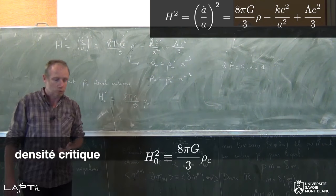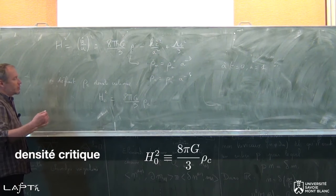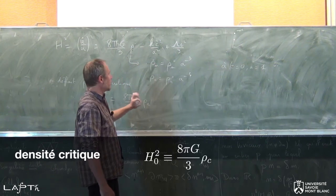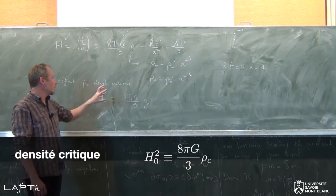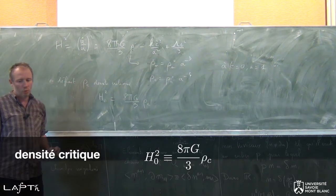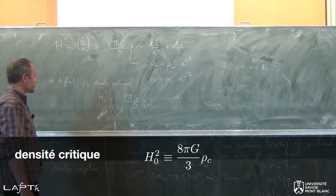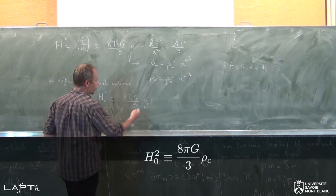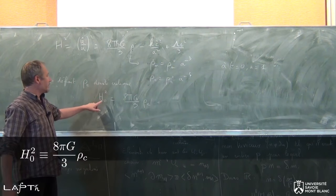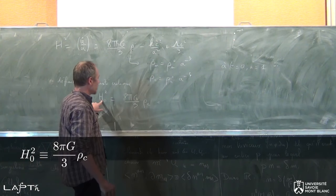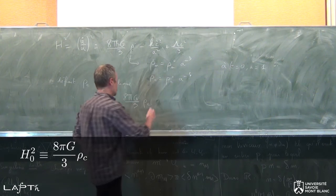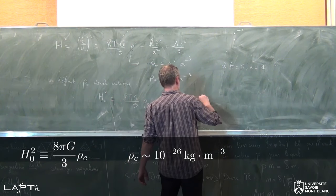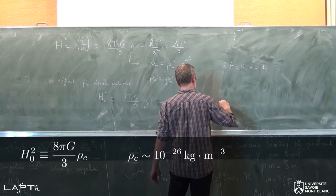La densité critique, c'est la densité d'un univers qui est plat et sans constante cosmologique, et pour lequel la constante de Hubble actuelle vaut H₀. C'est la densité qui rend l'univers plat aujourd'hui. Elle est critique dans le sens où si la densité est légèrement inférieure ou légèrement supérieure à ρ_C, on passe d'un régime dans lequel la courbure a un signe à une situation dans laquelle elle a l'autre signe. Donc k égal à 0 sans constante cosmologique pour ρ égal à ρ_C, et selon que ρ est plus petit ou plus grand que ρ_C, on a k qui vaut 1 ou −1.